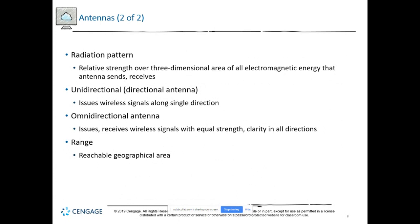The radiation pattern describes how an antenna uses electromagnetic energy. There are two different antenna types: unidirectional antennas that send wireless signals in a single direction, and omnidirectional antennas that receive wireless signals in all directions.